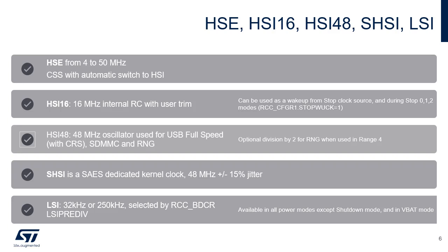The high-speed internal oscillator is a 16 MHz RC oscillator, which provides 1% accuracy and fast wake-up times. The HSI16 is trimmed during production testing and can also be user-trimmed to take into account temperature and voltage variations. The HSI16 can be automatically awoken when exiting any stop mode. The HSI48 is generated from an internal 48 MHz RC oscillator. 48 MHz is a canonical frequency for the USB full-speed module. HSI48 can also be used as the reference clock for the RNG and SDMMC modules, and is associated with a special clock recovery system (CRS) that dynamically adjusts the frequency according to a USB full start-of-frame packet, the LSE, or an external signal.